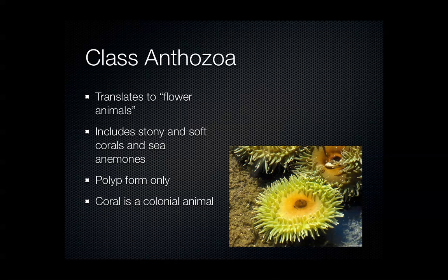Coral is a colonial animal, meaning it's one organism made up of several individuals. Even though the individuals look like they could be separate, they never are — you can't actually physically separate them without that part of the organism dying.